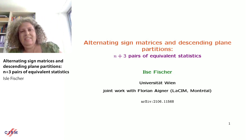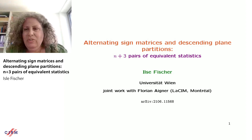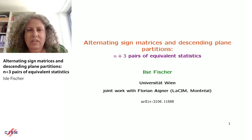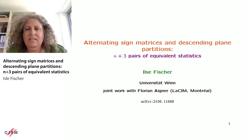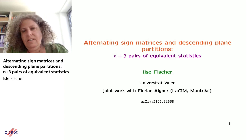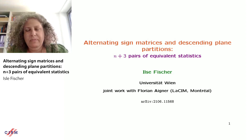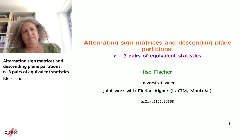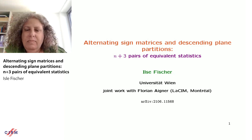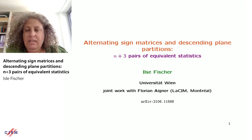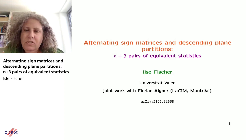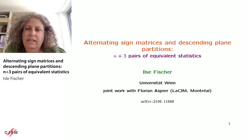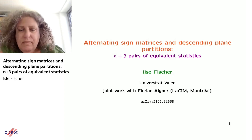Thank you very much for the nice introduction and for the invitation. I'm talking about this still mysterious relation between alternating sign matrices and descending plane partitions. We know there is the same number of alternating sign matrices as descending plane partitions, but we still don't have a bijection. I'll show you n plus three pairs of equivalent statistics on extended objects. This is joint work with Florian Aigner, a former PhD student of mine, currently doing a postdoc in Montreal.